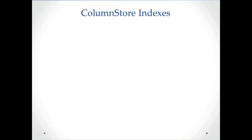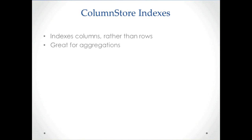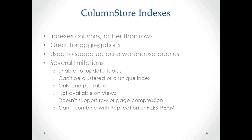Column store indexes is a nice new feature for those that do data warehousing. These are indexes created on columns rather than on rows, so the query optimizer first selects the columns needed in your query, then selects the rows. It works great for column-specific operations like aggregations with MAX or COUNT — which is typically what data warehousing queries do when summarizing large amounts of data. Even though column store indexes can dramatically improve performance, they are very rigid with lots of limitations: tables can't be updated when they have a column store index, it can't be created on views, it doesn't support row or page compression, and it can't be used with replication or file stream. They're primarily designed for querying large, read-only data warehousing tables.